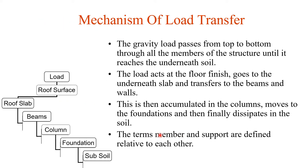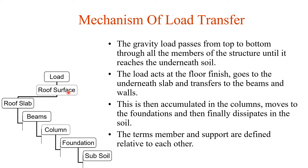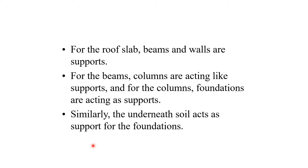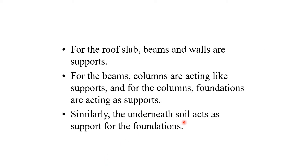The basic load transfer mechanism in a building works as follows: load transfers from the roof surface to the roof slab, then from the slab to beams, from beams to columns, from columns to the foundation, and from the foundation to the subsoil, which spreads the load to the ground. In this chain, beams act as supports for the slab, columns act as supports for the beams, and the foundation acts as support for the columns, with the underlying soil supporting the foundation.